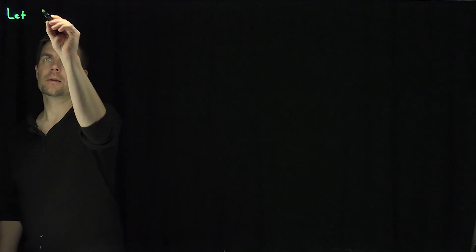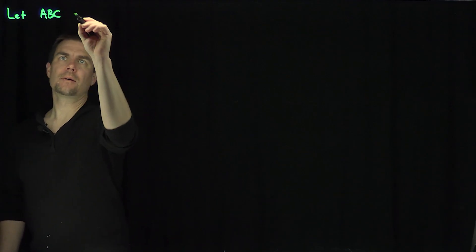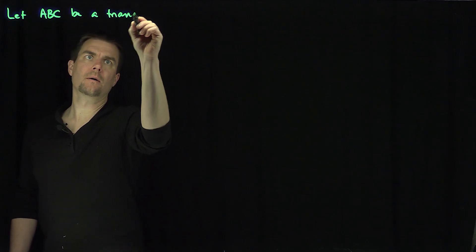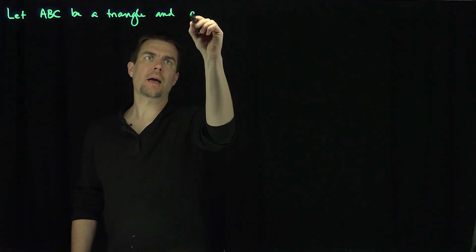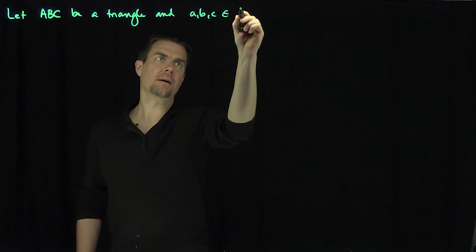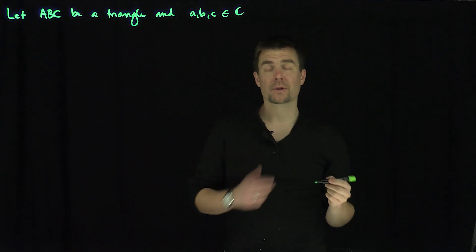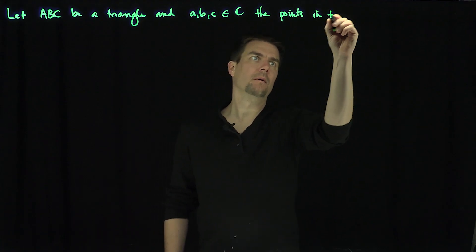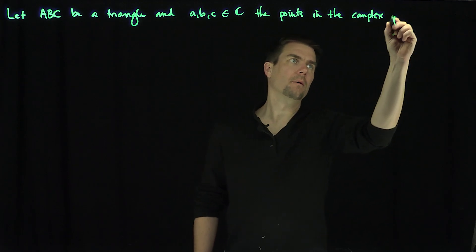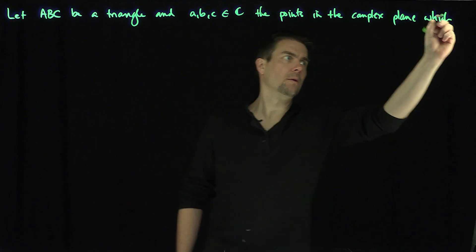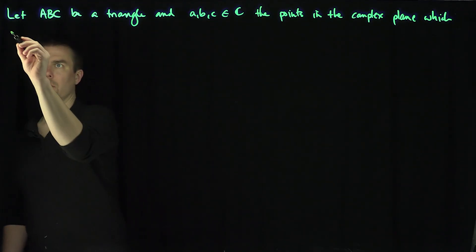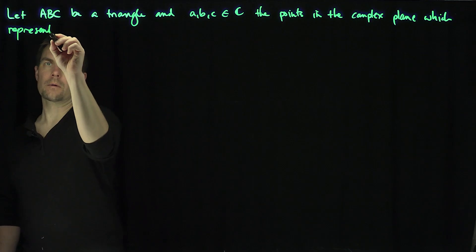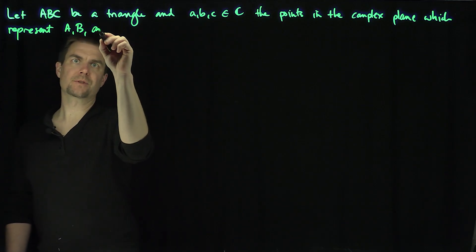Hello students, in this video we will discuss equilateral triangles using complex numbers. Let ABC be a triangle where A, B, and C are points of the complex plane representing those vertices.